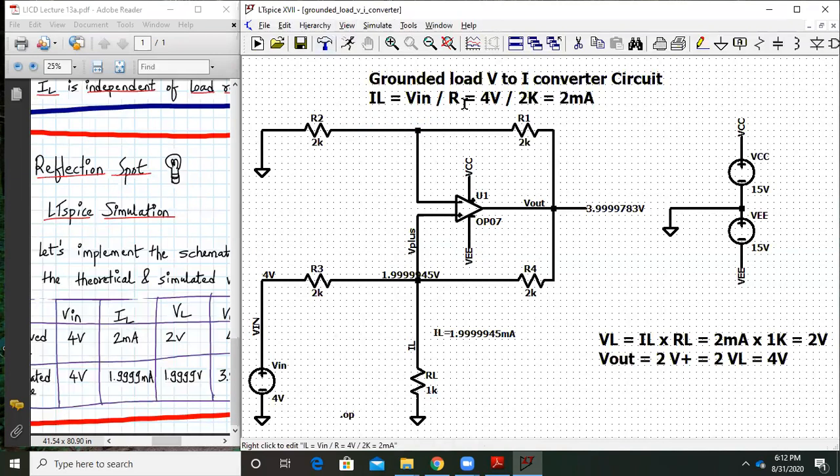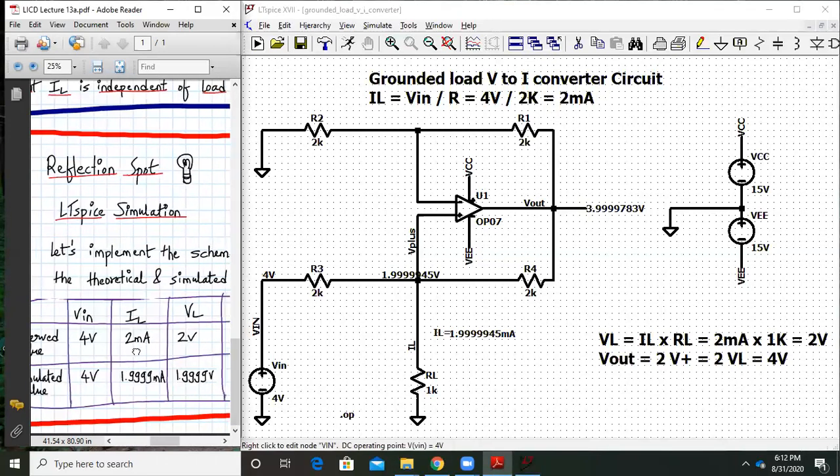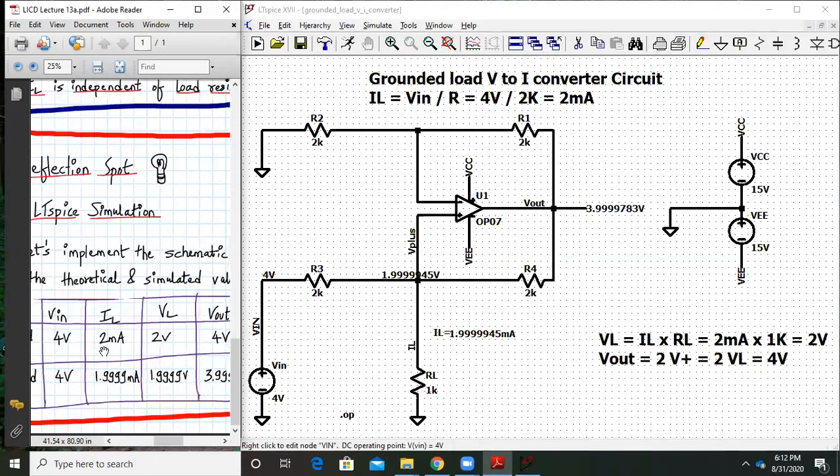IL will be V in upon R where R is 2K and V in is 4V. Hence IL will be close to 2mA. Observed value is 2 and our theoretical value is 2mA and our simulated value is 1.999mA. V in is 4 actually.